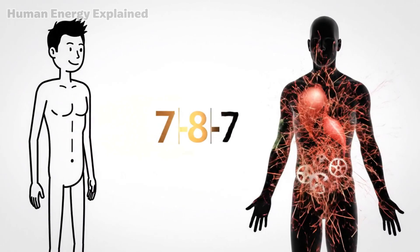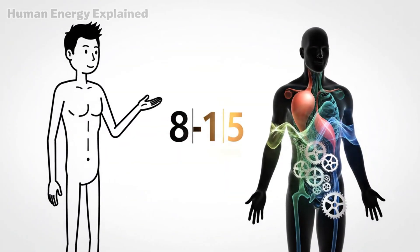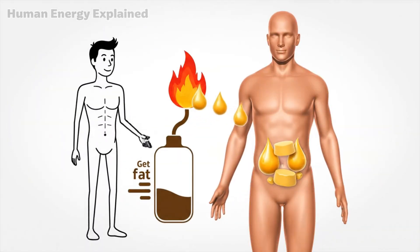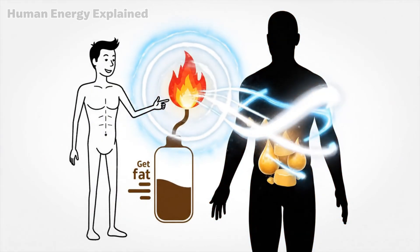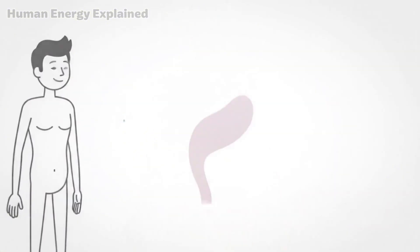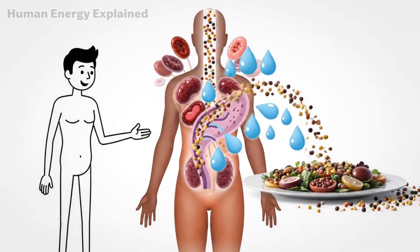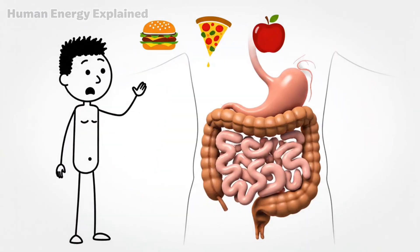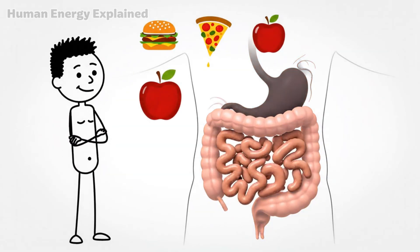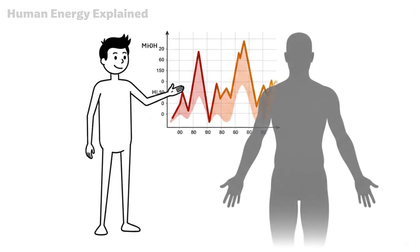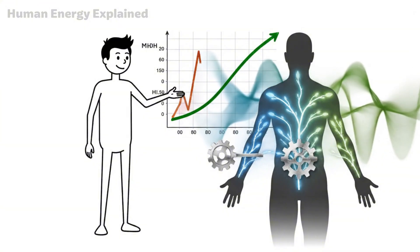Days 8 through 14 mark the adaptation phase. This is when things start to feel different. The struggle of week one fades into something more rhythmic. Your body has accepted the new pattern and is adjusting accordingly. Fat burning becomes your primary energy source. Insulin sensitivity improves dramatically, meaning when you do eat your evening meal, your body handles those nutrients more efficiently. Blood sugar doesn't spike as high. Energy doesn't crash as hard. Your metabolic machinery is running cleaner.